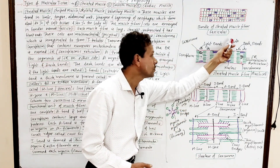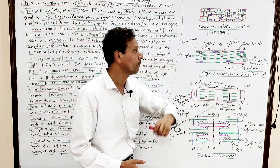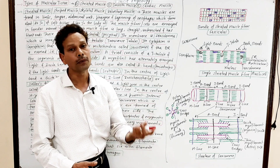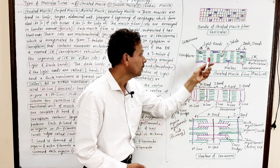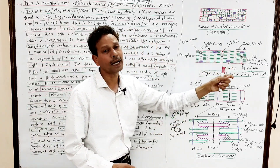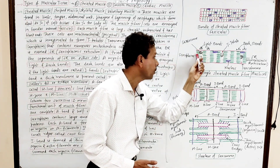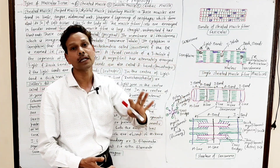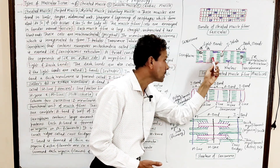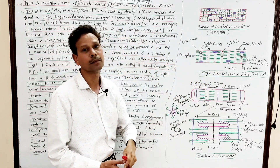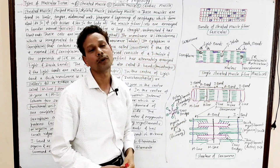The T-tubule together with the fragments of sarcoplasmic reticulum on both sides produces a triad. The multi-nucleated condition is syncytial. The mitochondria of muscle cells are called sarcosomes, the cytoplasm is called sarcoplasm, and the outer membrane is the sarcolemma.